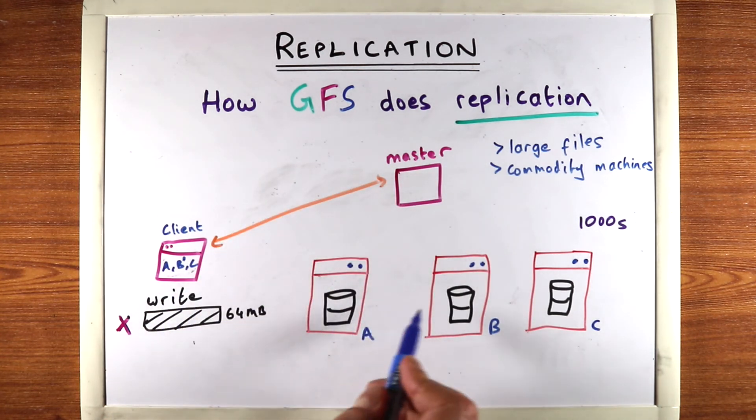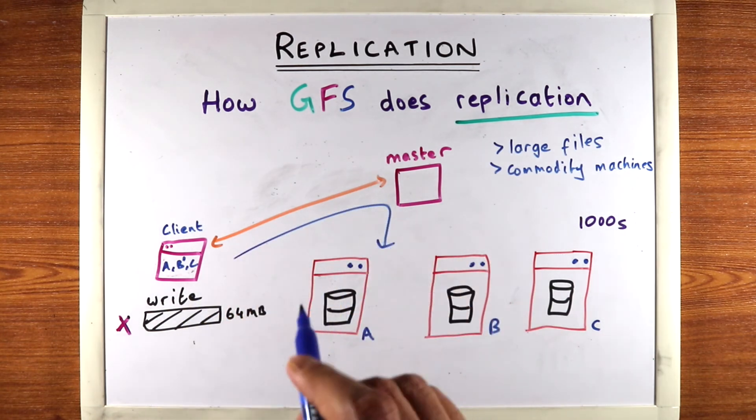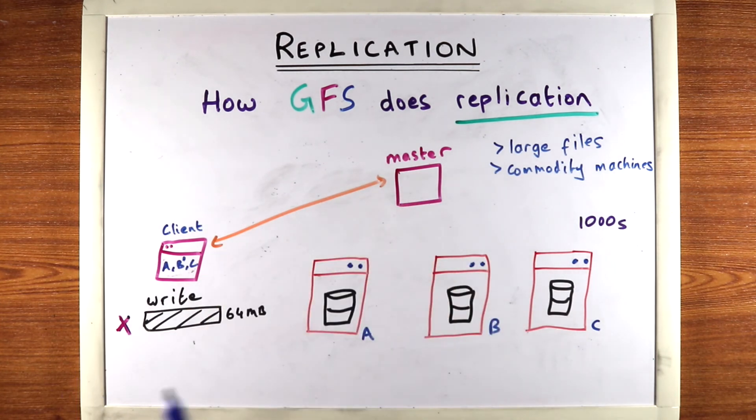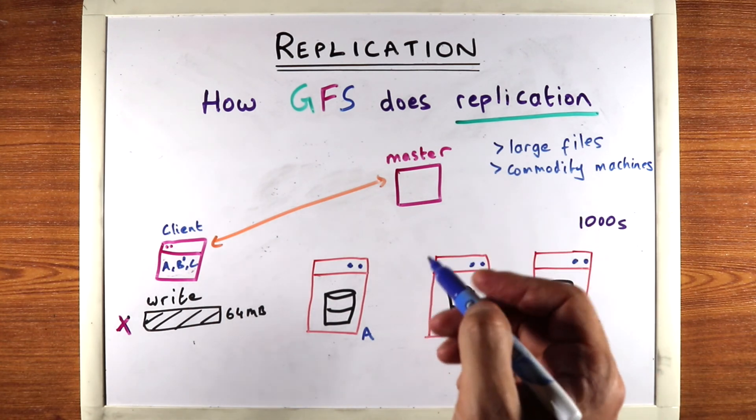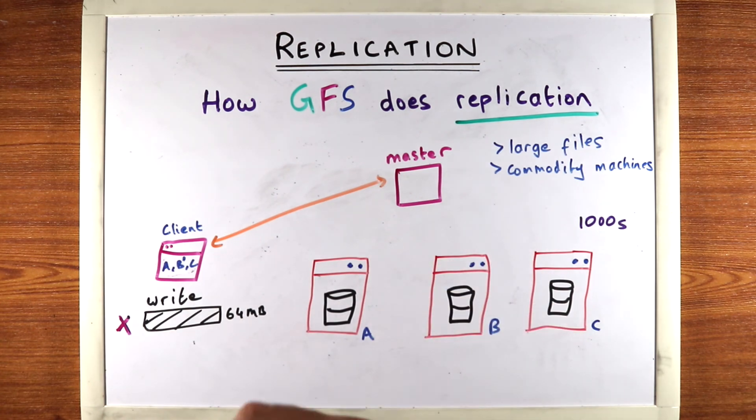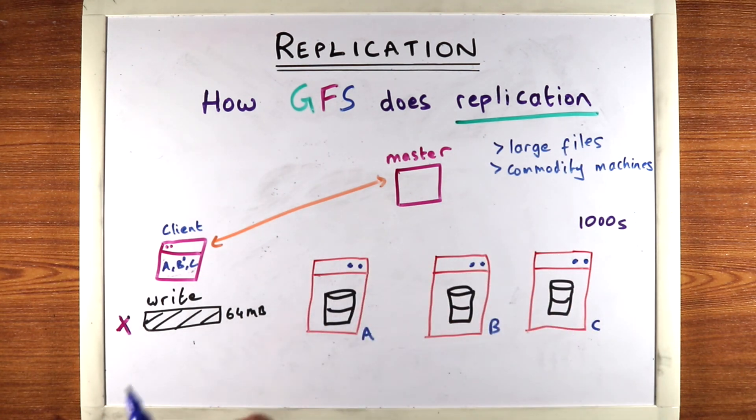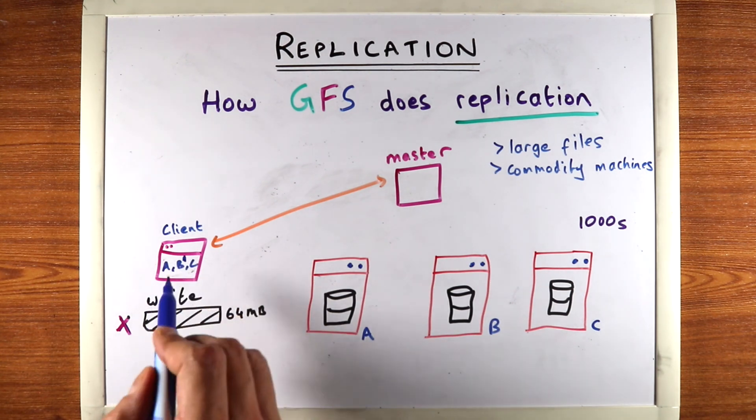The client can now coordinate with these three machines to write this block of data. If you were to coordinate with the master and if the data flowed through the master, that's not very efficient because the master would become a bottleneck. Every client would be interacting with the master for every single write, which is really not efficient. So the master is only used to get metadata about which machine to write to. So the client now knows that it needs to write to machines A, B, and C, and machine B is a primary copy.